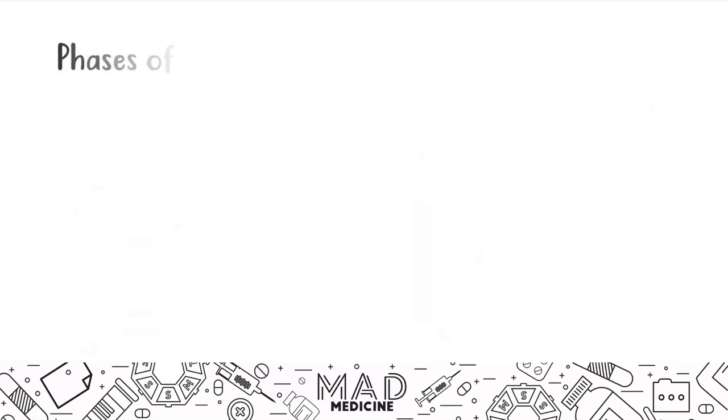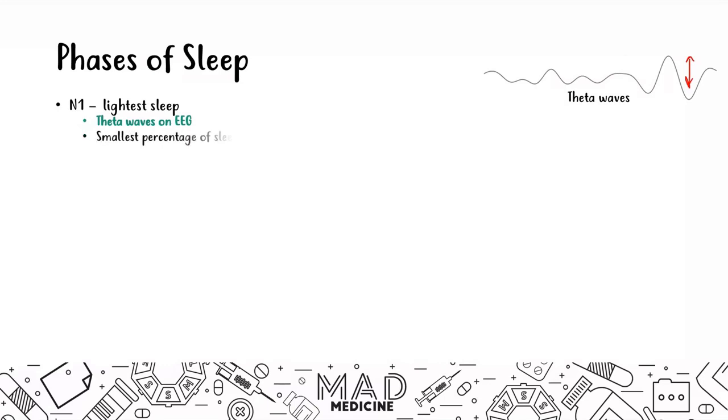We're going to start talking about phases of sleep. Phase N1 is your lightest sleep. You have theta waves on an EEG and this is what a theta wave looks like. The amplitude varies but overall the waves are very close together. This is going to be the smallest percentage of sleep.